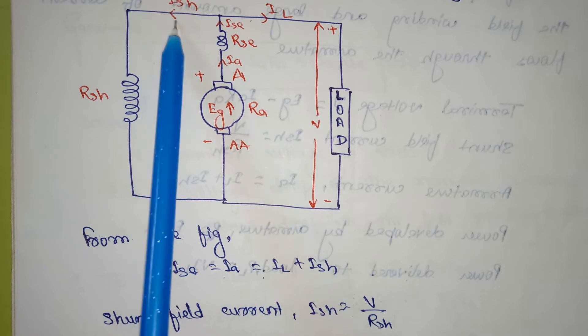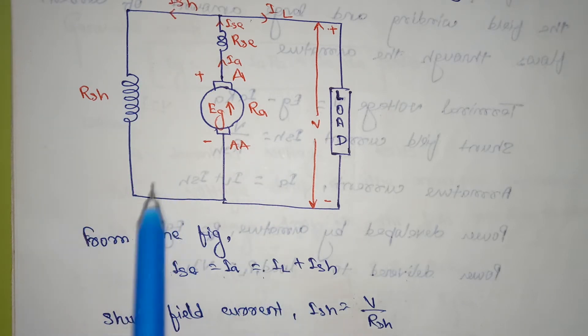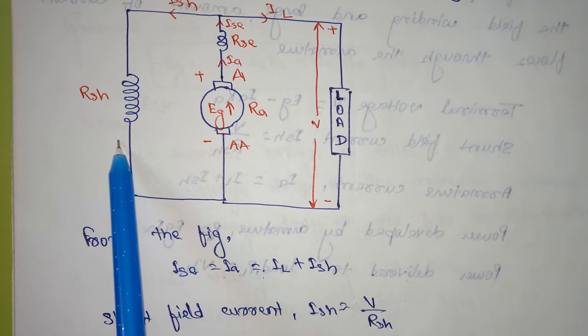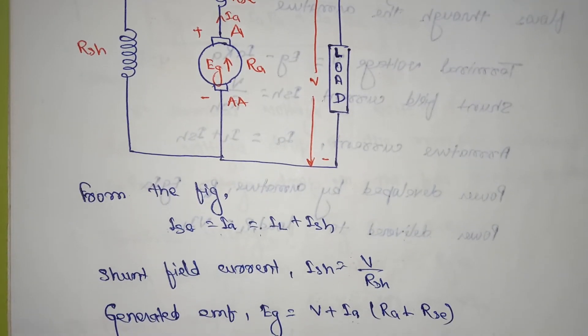Ish is equal to V, terminal voltage, by the shunt resistance.